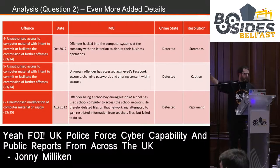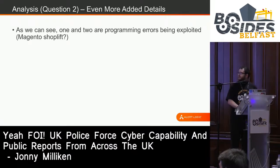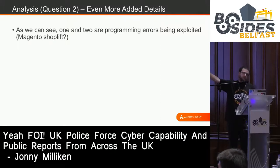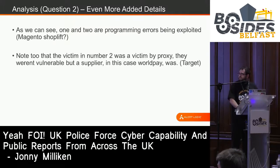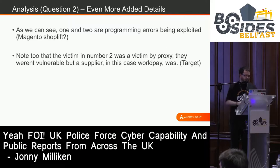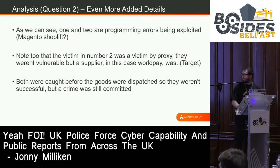Looking at the internals of these: one and two were essentially programming errors being exploited. We have examples like the Magento shoplift panel — something very similar to what happened with the previous ones. This is evidently being used against small and medium businesses, and we have demonstrable evidence of that. Note that the victim of number two was a victim by proxy — they were not themselves vulnerable, one of their suppliers was. Can anybody think of another big company attacked the same way? Target. By proxy, these people are also vulnerable, and these vulnerabilities all exist within the small and medium business environment.